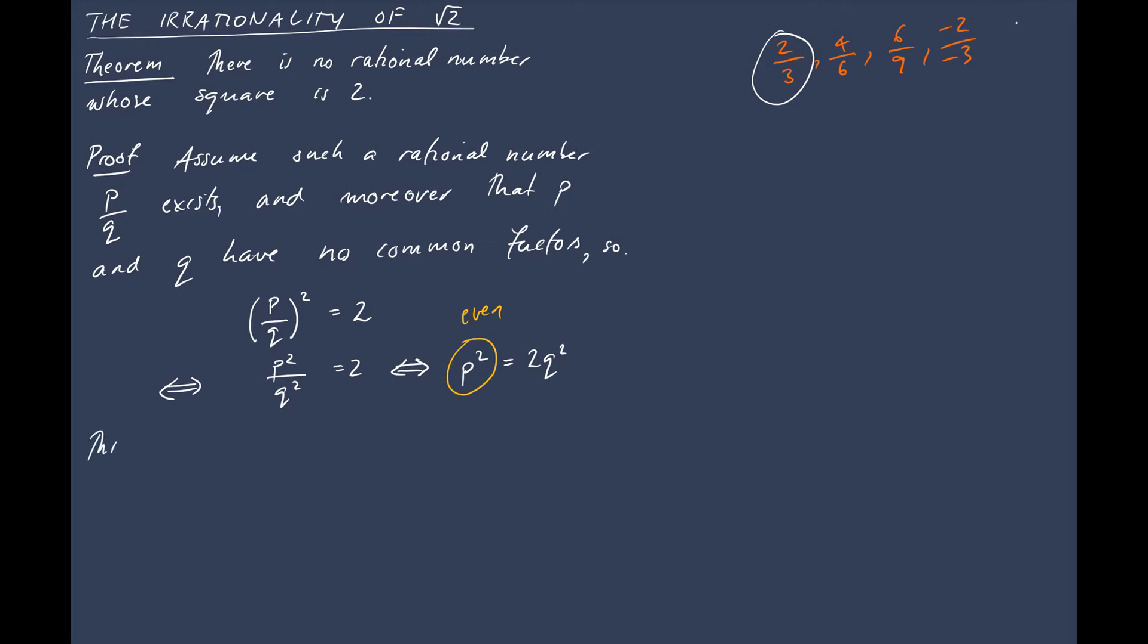So this implies that p squared, and hence p, is even. So we now have some new information about p, and we should try and incorporate that down as a mathematical statement somehow. So we'll say that p is equal to 2 times some other integer, m. And we'll substitute that back into our expression just here. So substituting back in.